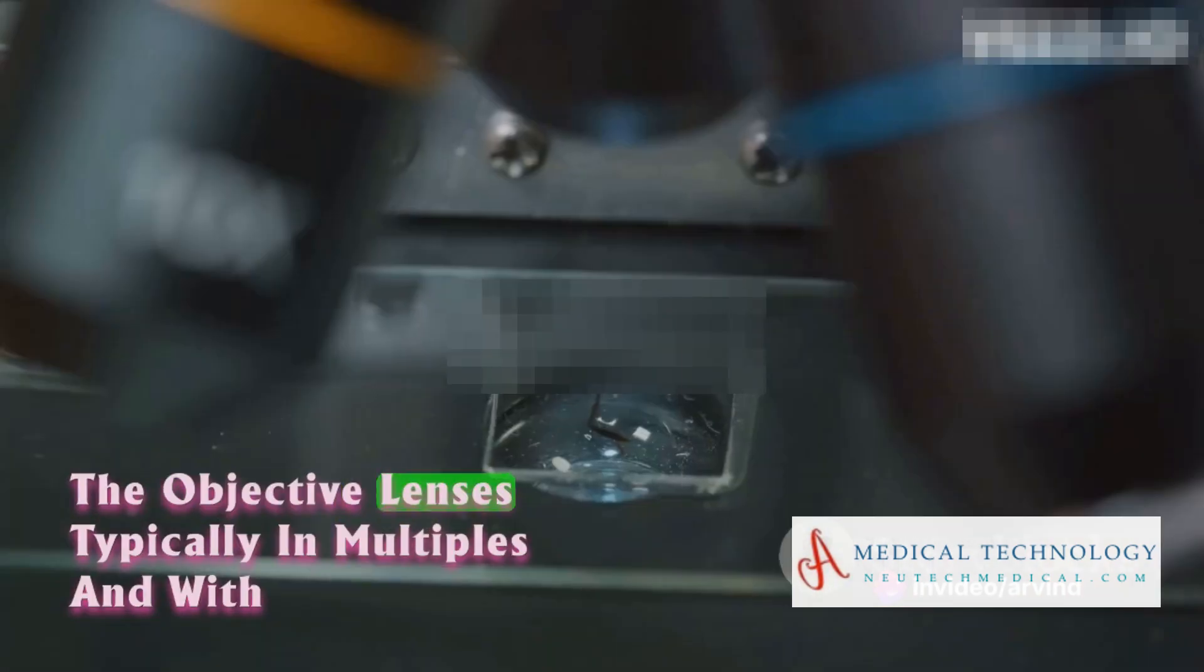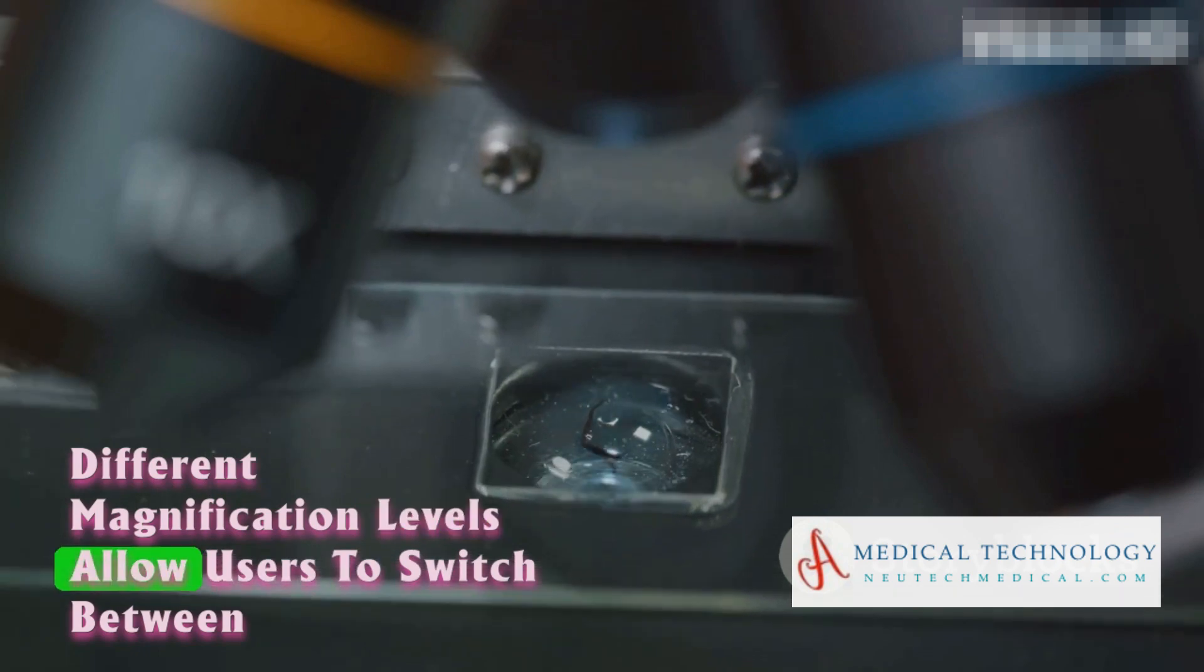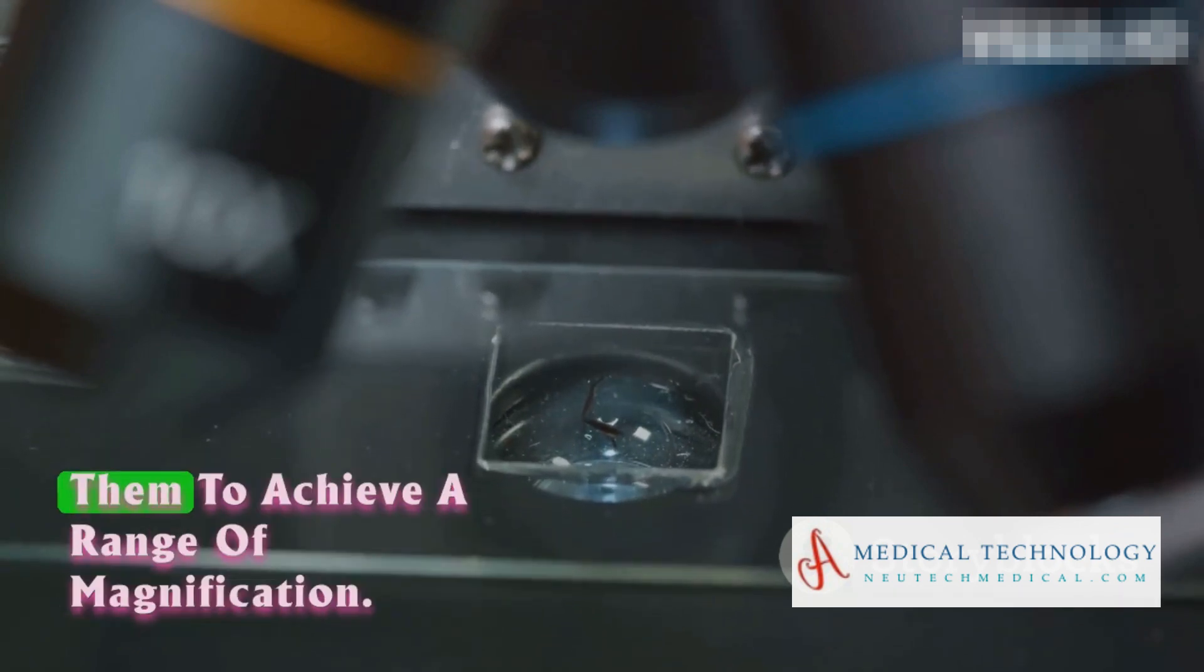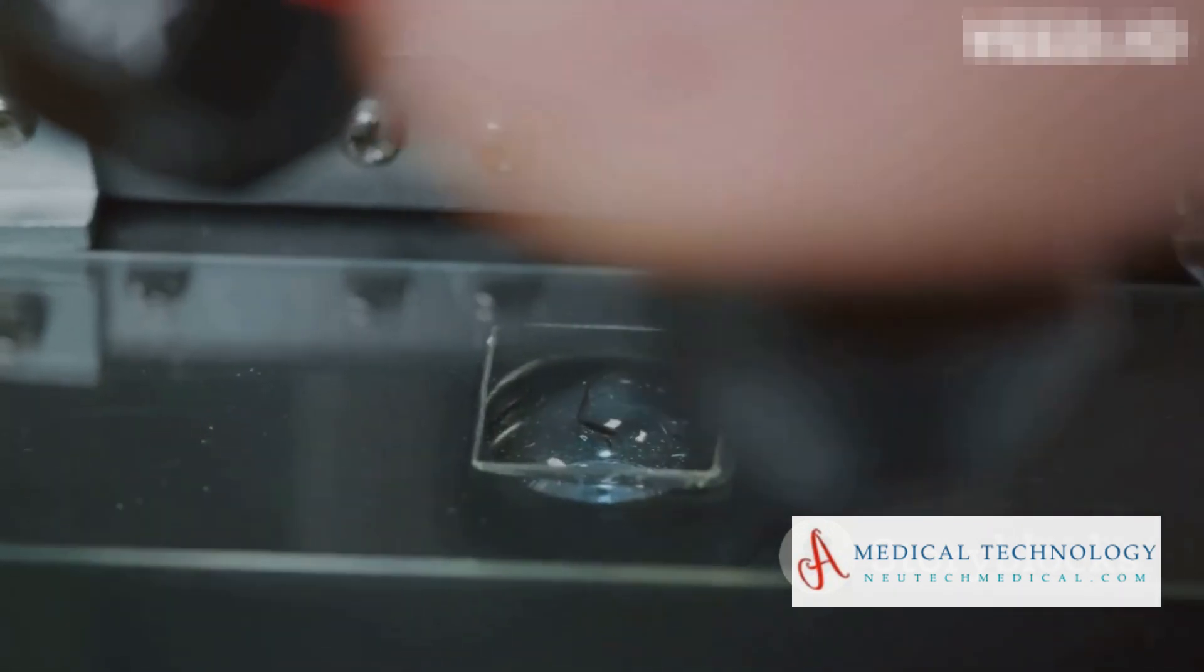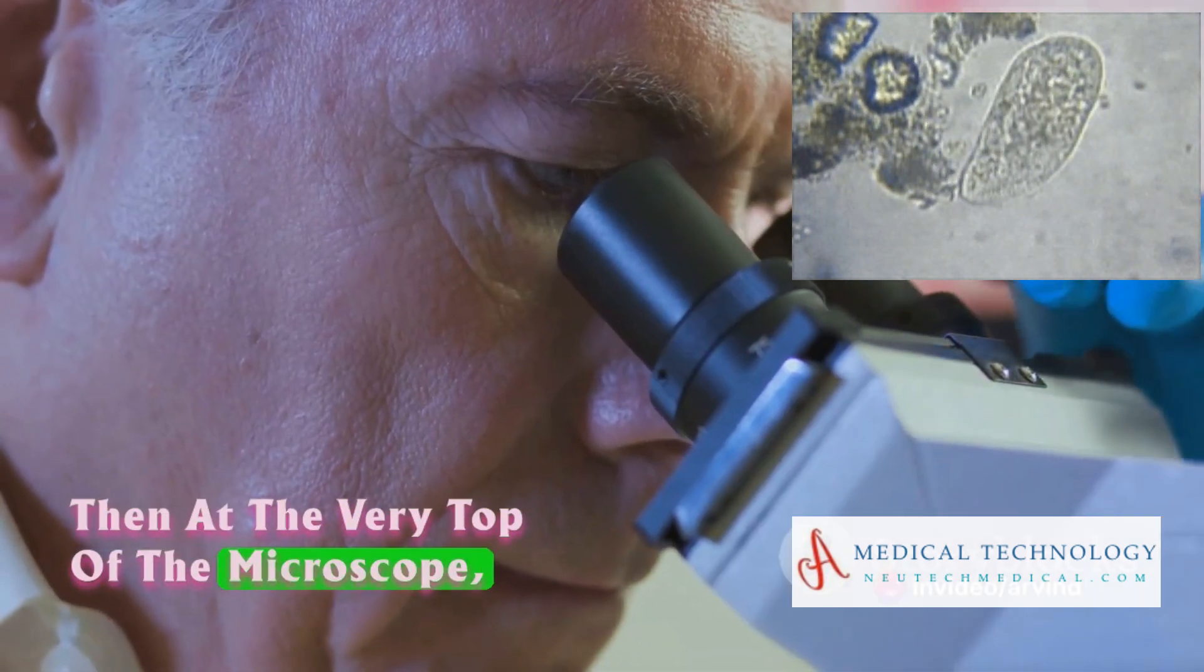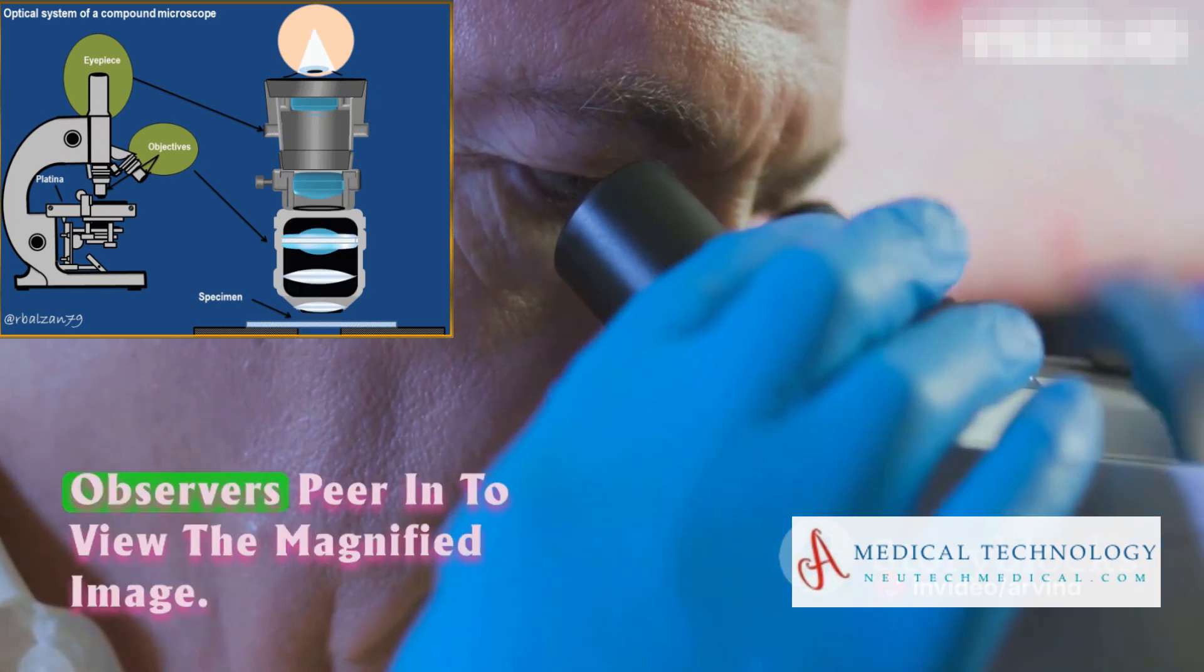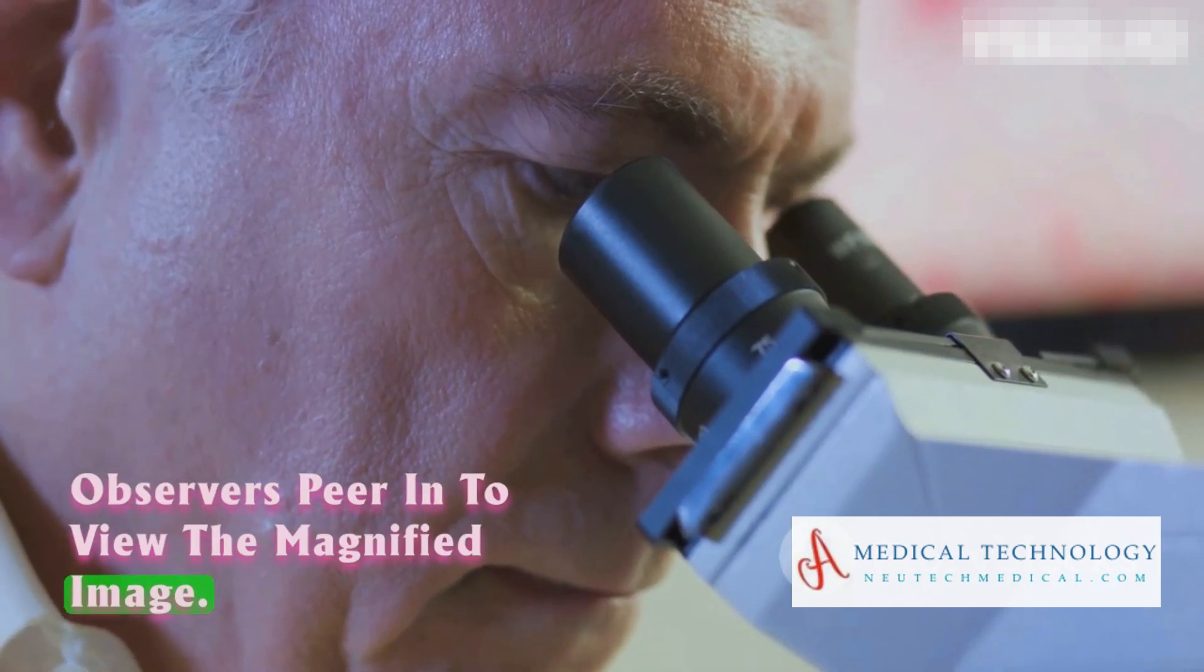The objective lenses, typically in multiples and with different magnification levels, allow users to switch between them to achieve a range of magnification. Then, at the very top of the microscope, you'll find the eyepiece, or ocular lens, where observers peer in to view the magnified image.